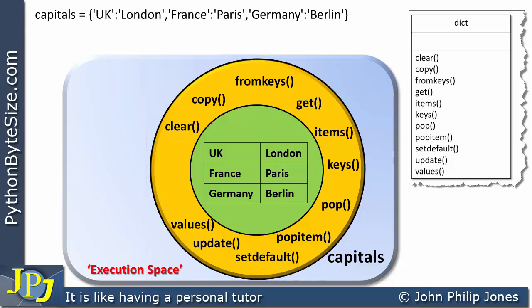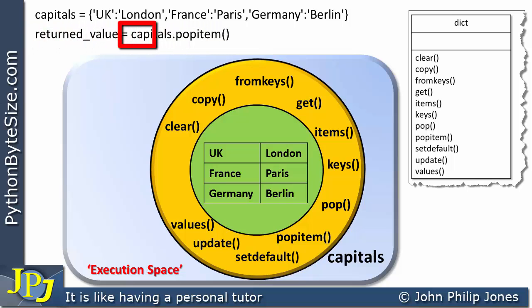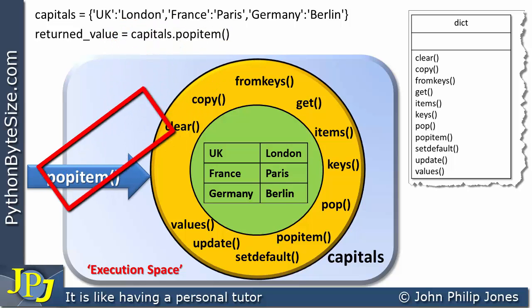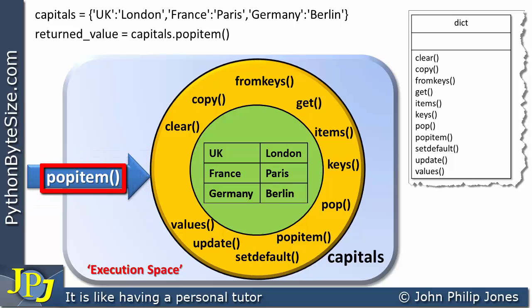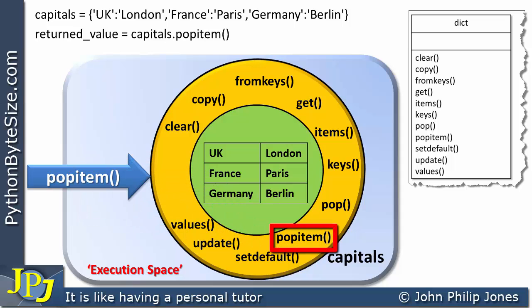Let's now consider the following program statement. You can see that returned_value is assigned, and on this side there's a message — a message to the object you can see in the diagram. I'm going to represent the message with this arrow here, which you can see is popItem with the brackets. If you look in the brackets, you can see there's nothing there, because the popItem method doesn't take any parameters with it. This message is going to invoke this particular method here.